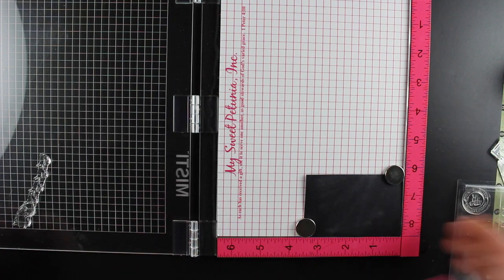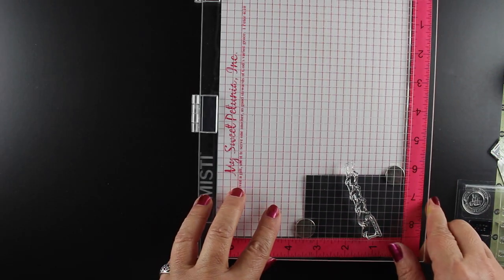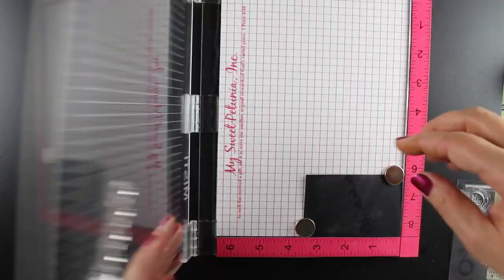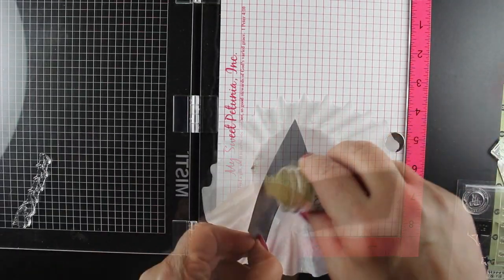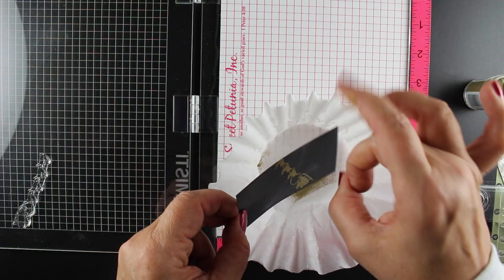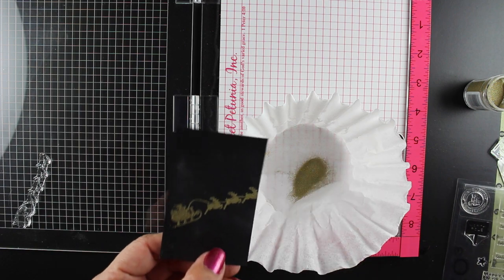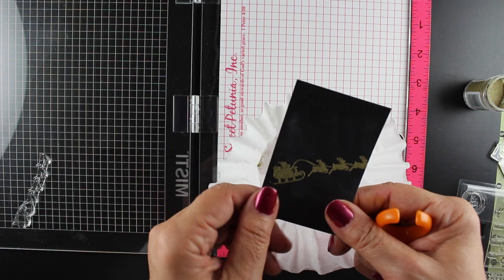Put my de-static-ifier thingy down there so that none of the powder sticks where I don't want it. Press it down and I'm going to use the same golds that I used on the other side. So I'm going to do the same thing, and if you want to eliminate having extra stuff, just put the powder right where you want it. There's no reason to go any further with it.